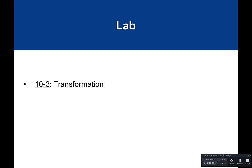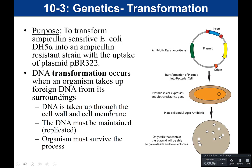In this video, we are going to talk about transformation. The purpose of this experiment is to transform the ampicillin-sensitive E. coli DH5-alpha into an ampicillin-resistant strain with the uptake of a plasmid called PBR322.